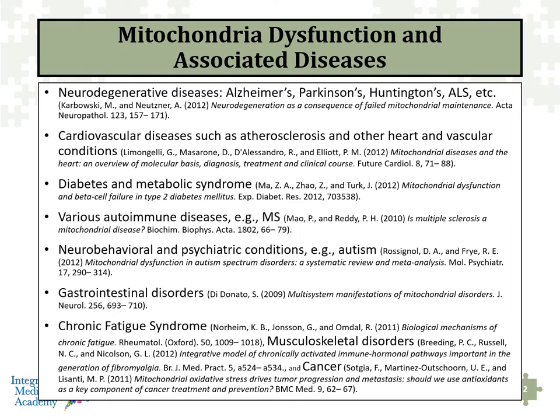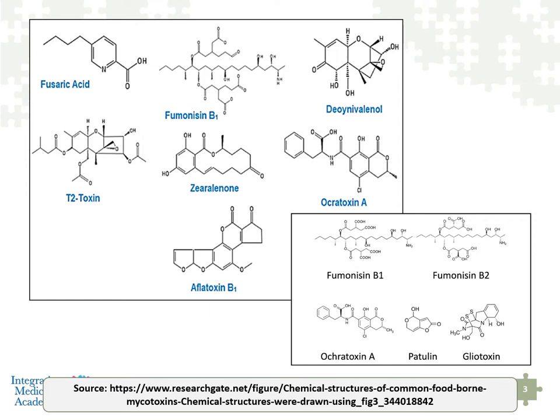When we look at mycotoxins — these are mold toxins of various forms, and there are different types, like ochratoxin and T2 toxin — some of these are very toxic. In fact, some of these toxins are considered to be some of the most potent biological toxins known in the natural world.